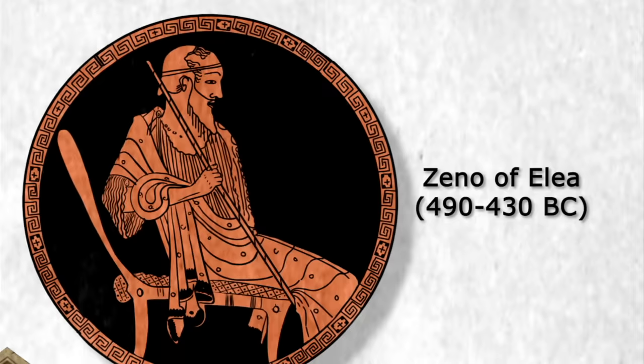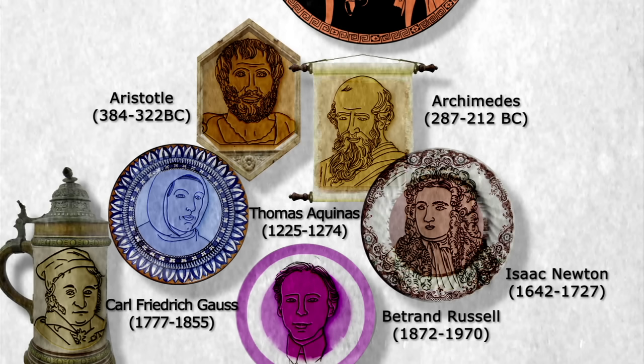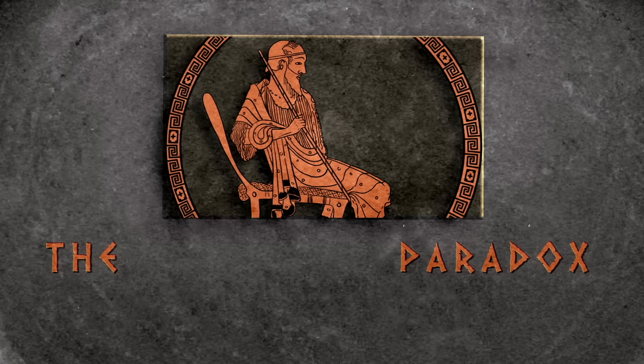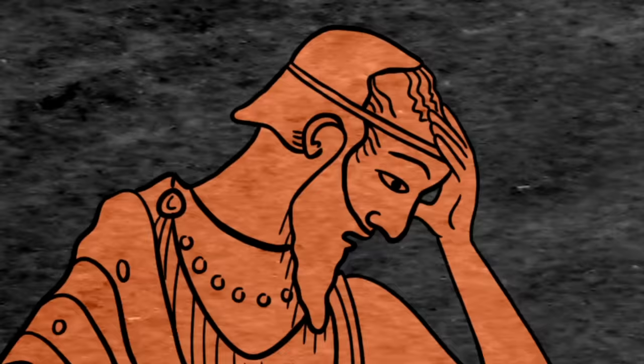For more than 2,000 years, Zeno's mind-bending riddles have inspired mathematicians and philosophers to better understand the nature of infinity. One of the best known of Zeno's problems is called the dichotomy paradox, which means the paradox of cutting in two in ancient Greek. It goes something like this.